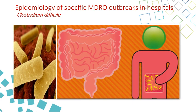The next MDRO is Clostridioides difficile. Although C. difficile is not resistant to several antimicrobials like other MDROs, it is grouped with them because it is transmitted through contact and prevented in the same way.